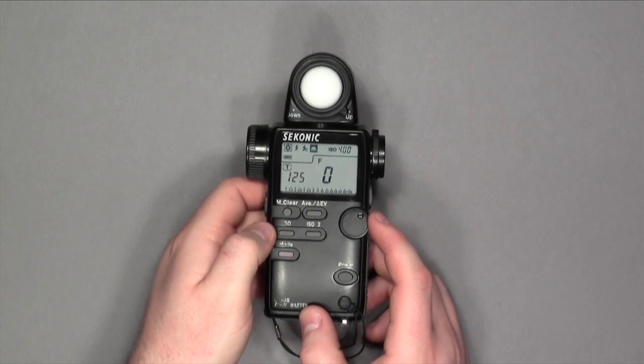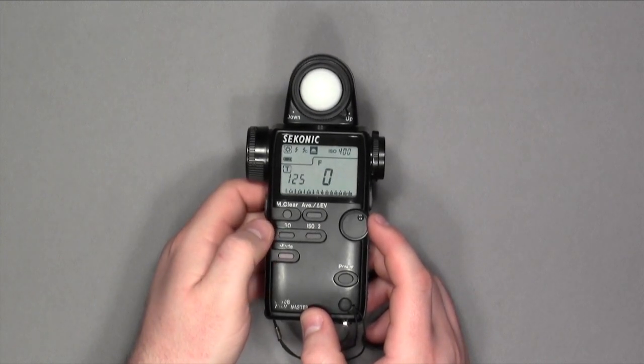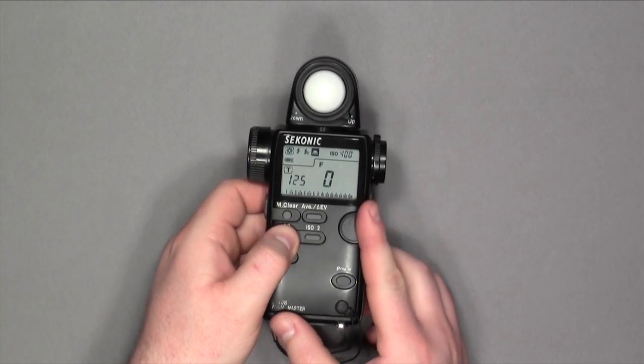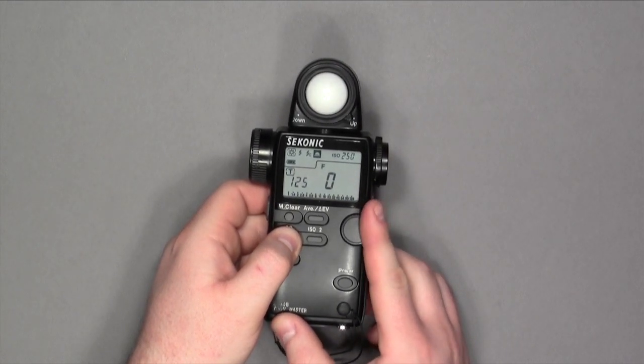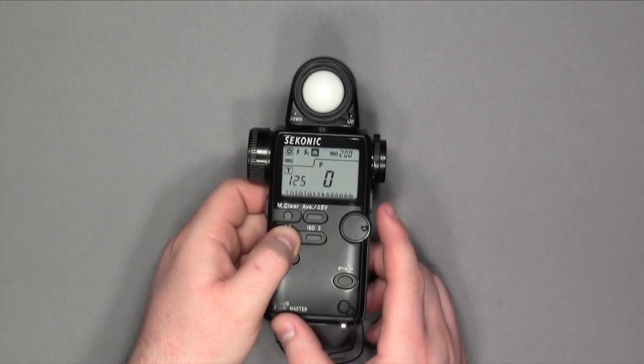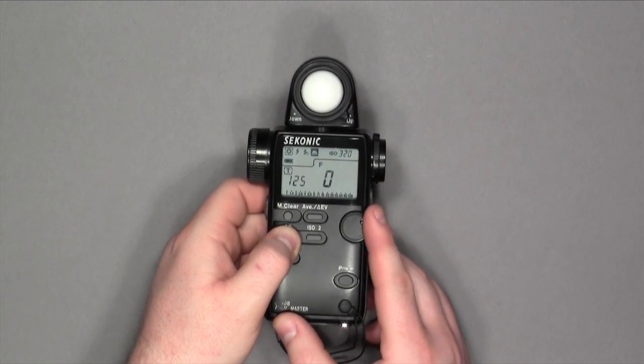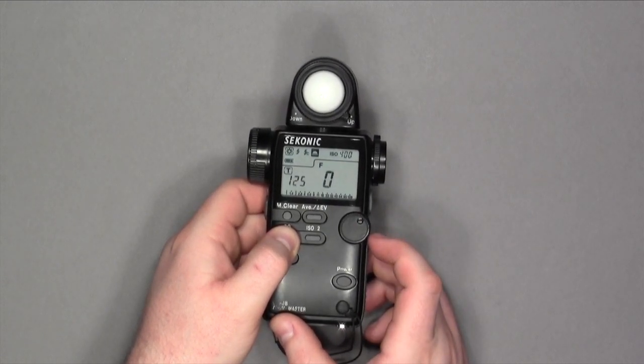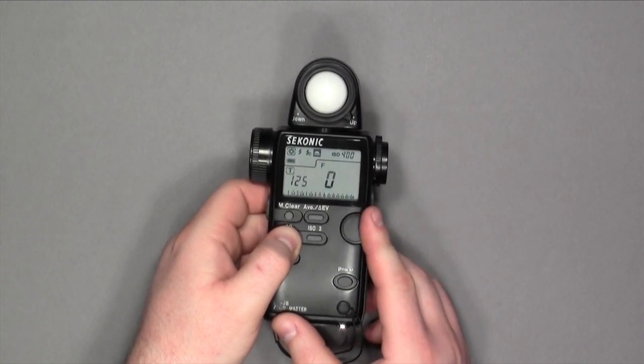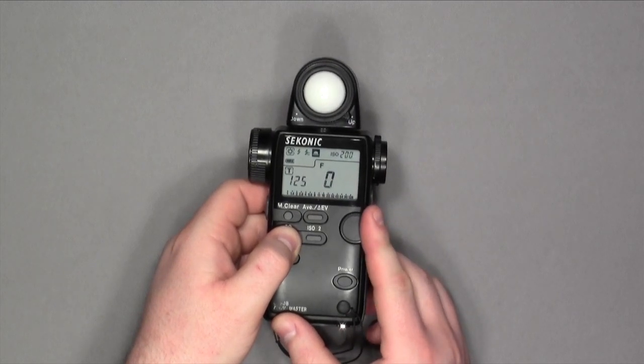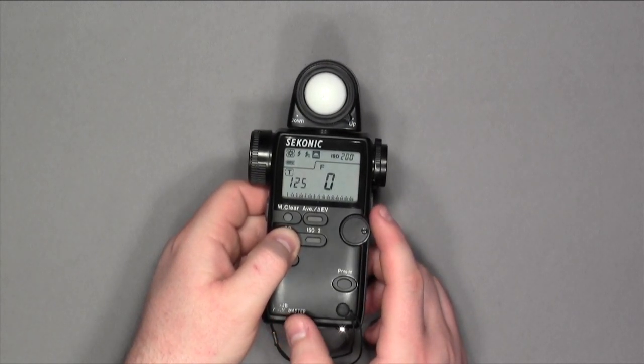Again, these light meters are set to third stop difference. As you can see, if I hold this button down, it changes to 320, 250, then 200. One, two, three. That means third stops. There are three different settings it could be on between whole stops.